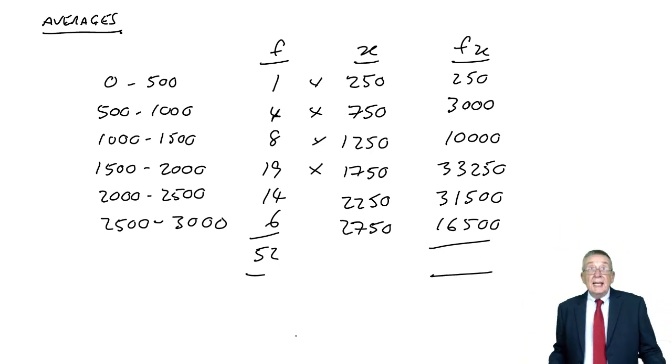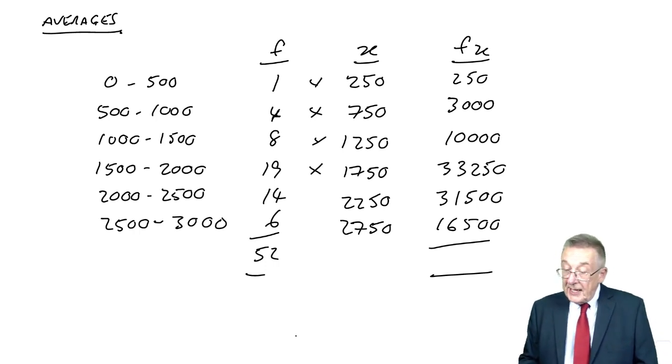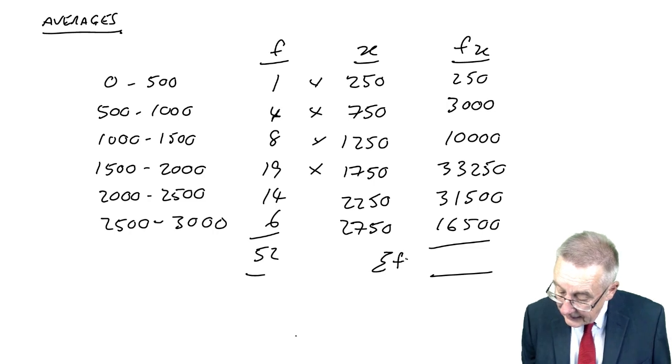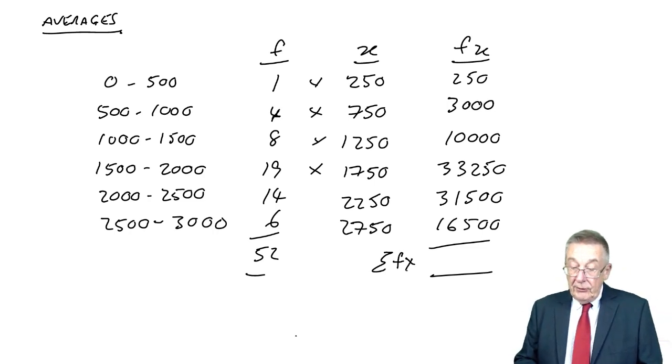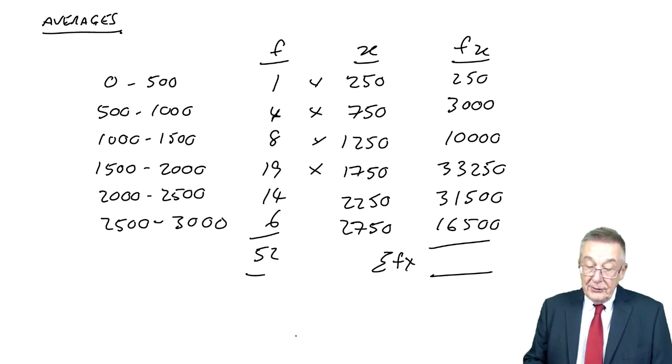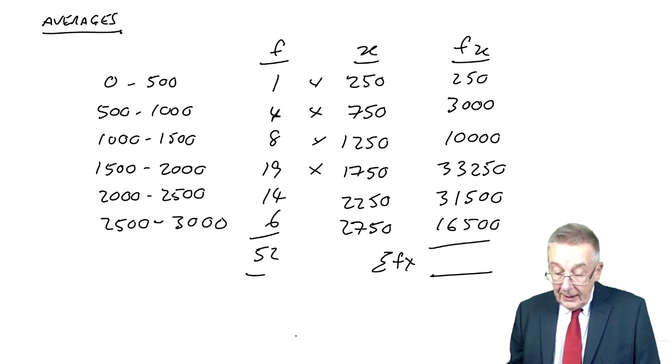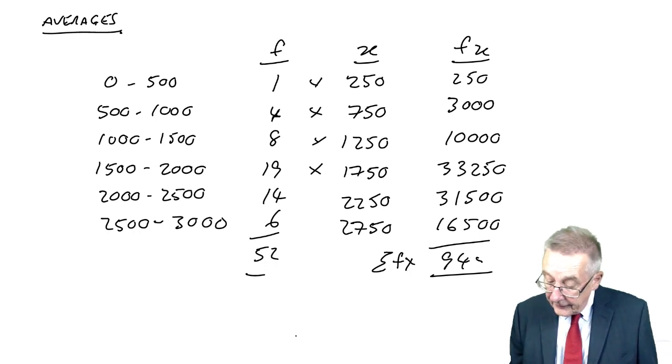So we're now treating it effectively as though they are discrete using the midpoints. And the total of the F times X's, or sigma FX, is 250 plus 3000 plus 10000 plus 33,250 plus 31,500 plus 16,500, which equals 94,500.